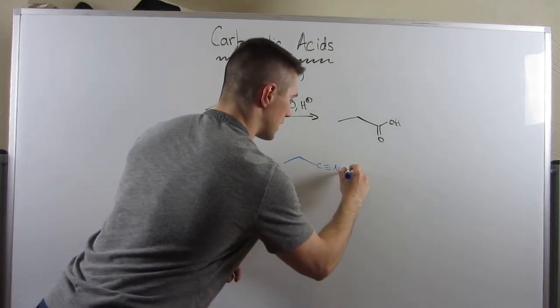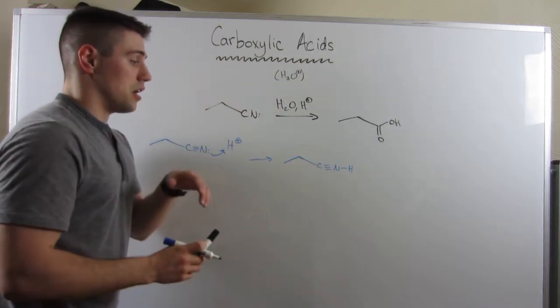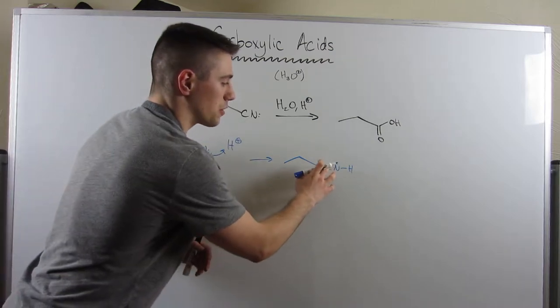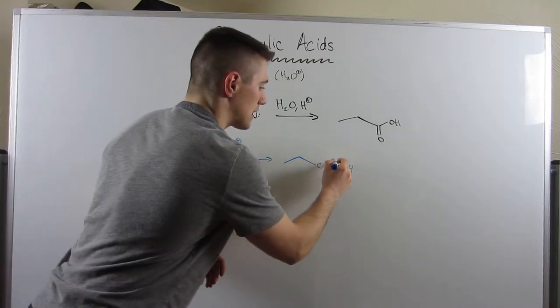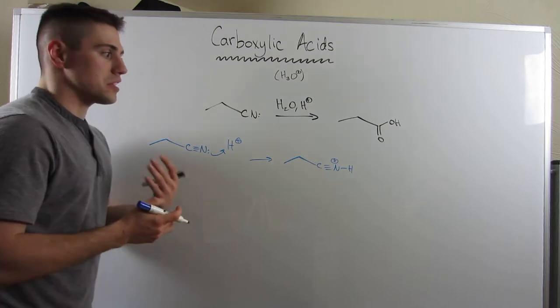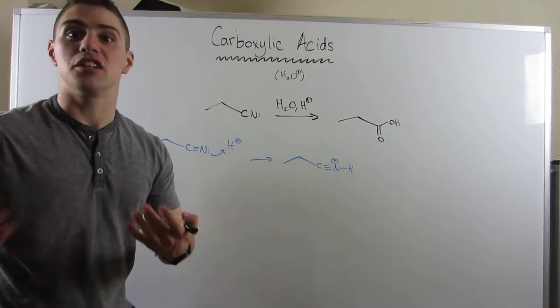I'm going to draw my first step: protonate the nitrogen with H+. So what that does is we protonate nitrogen. Remember, nitrogen likes a formal charge of 5, but you can see 1, 2, 3, 4. We protonate him, that gives him a positive charge. Electronegative atoms like nitrogen don't like to have a positive charge.